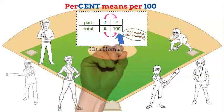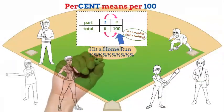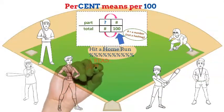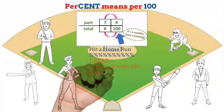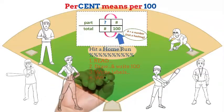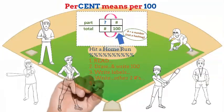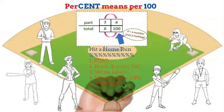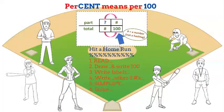Gather around and listen to our strategy to hit a home run with percents. Number one: read the problem. Number two: draw your graphic organizer and write 100 in the bottom right box. Number three: write the labels. Number four: write the other two numbers in the correct spot. Number five: simplify one of the ratios if possible. And finally, number six: solve the proportion.